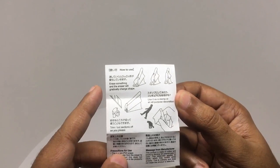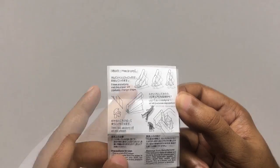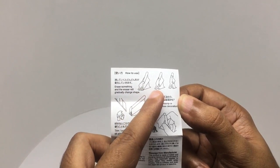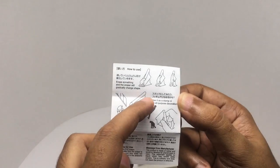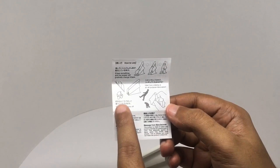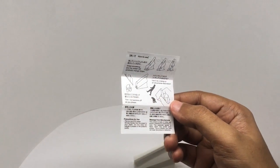The eraser will gradually change shape. As you erase, you can slowly see the transformation. You can also use this as a stamp or you can cut tiny pieces and get the whole story.